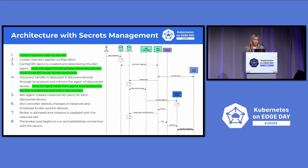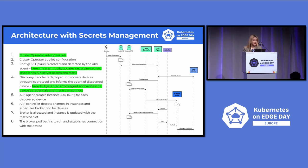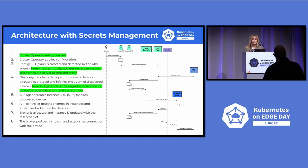In the new workflow, the cluster operator first sets up the secrets and ensures they are properly provisioned. Then the operator applies the configuration, and when Akri is created, the agent will pull down or update the necessary secrets since it has API server access. Then the discovery handler is deployed and gets the credentials from the agent to verify connection. The rest of the workflow remains the same. Currently, the agent cannot monitor changes in secret data after configuration is deployed, so if secrets change, the operator would need to manually redeploy the configuration YAML.